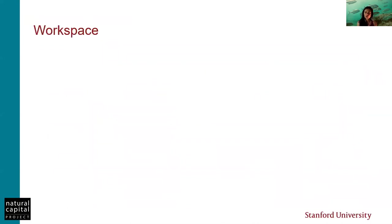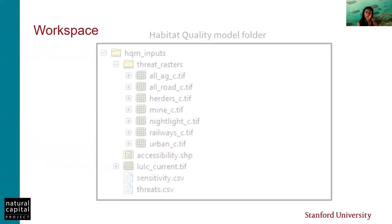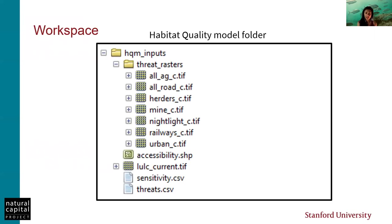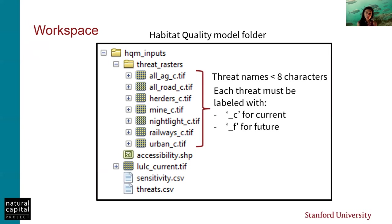Looking at the structure of the workspace: create a folder for the model, and the input folder must be nested within that larger folder. Within the input folder, create another folder for the threat rasters where all the rasters need to be stored together. Note that at the end of each threat raster name, include an underscore C to represent the current threat status and an underscore F for future threat status. Each threat name also needs to be under eight characters.